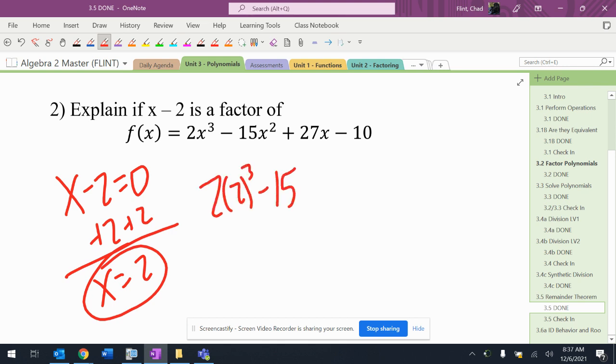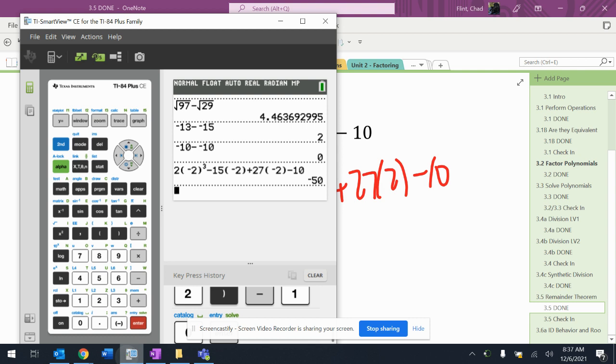2 times 2 to the 3rd minus 15 times 2 squared plus 27 times 2 minus 10. Alright, I put that in the calculator. So it's the same thing I had last time, except it's positive 2.